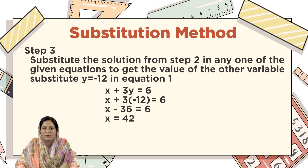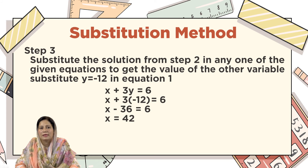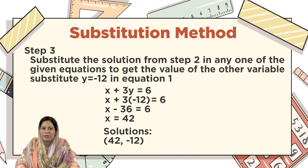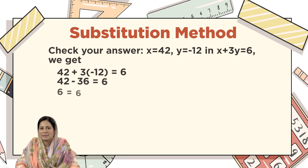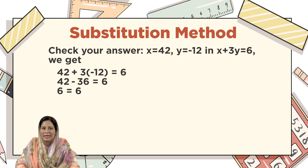Now it is time to write down the solution of the equation. The solution set would be (42, minus 12): 42 is the value of x and minus 12 is the value of y. You can also check your answer by substituting these values into any one of the given equations. If these values satisfy the given equation, it means your answer is correct.